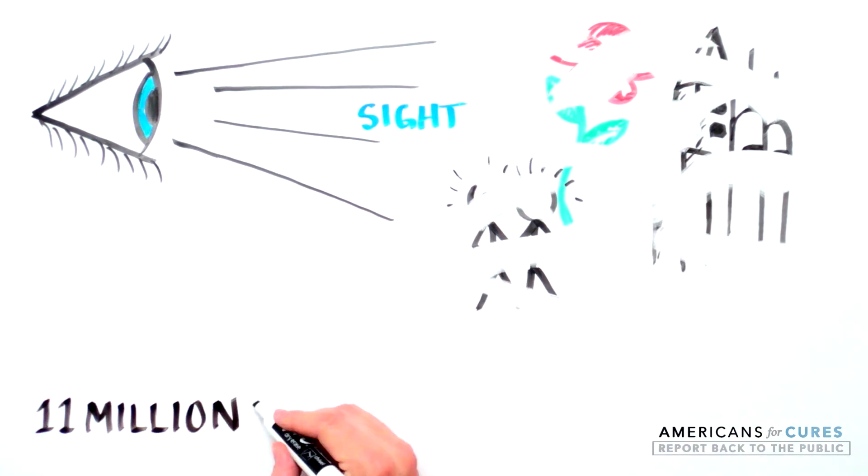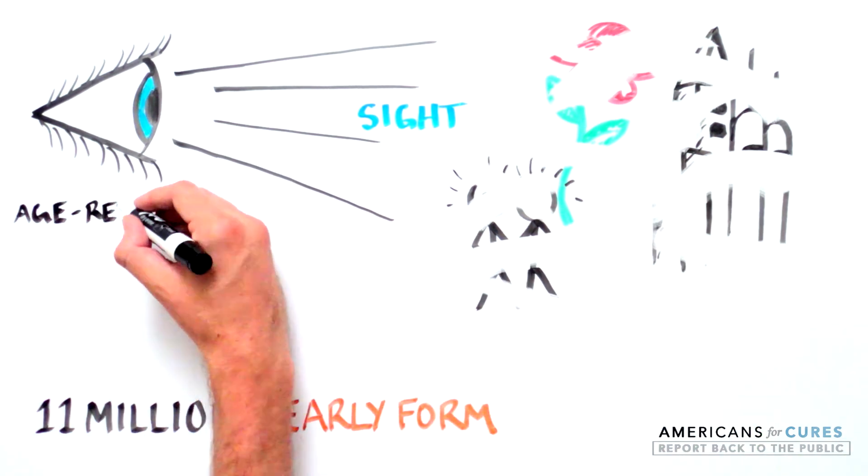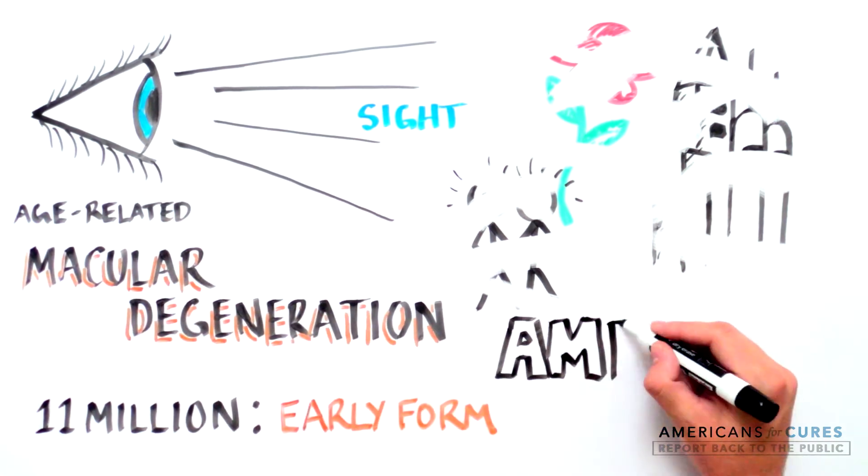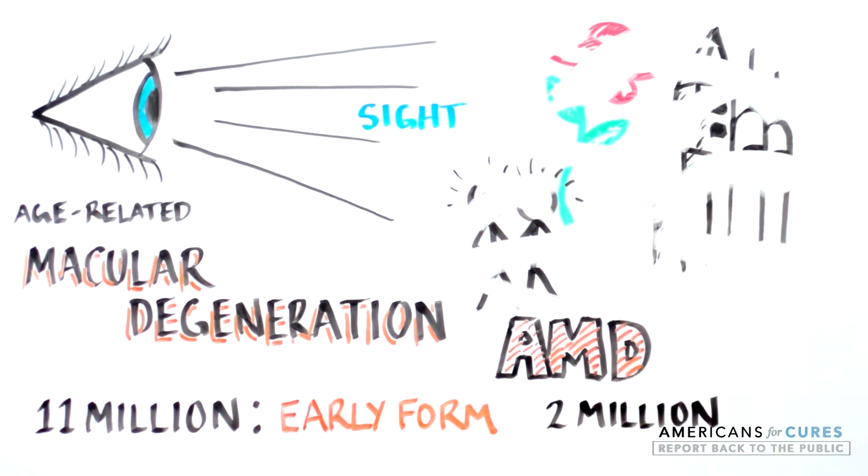Unfortunately, there are 11 million Americans with the early form of a disease known as age-related macular degeneration, AMD, and already 2 million have lost vision because they have the devastating late form of this disease.